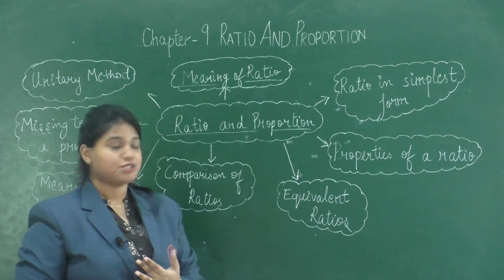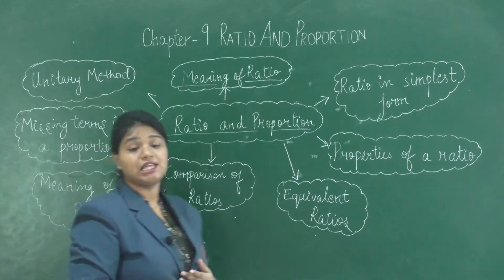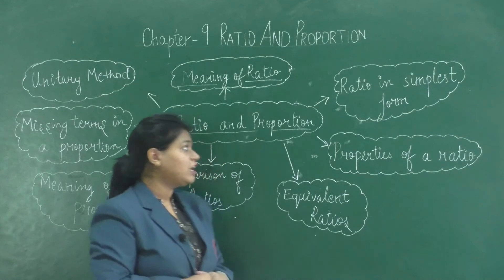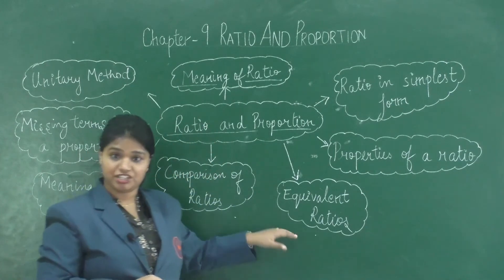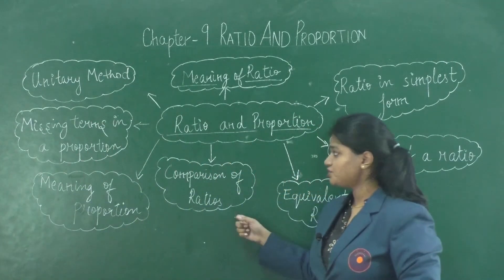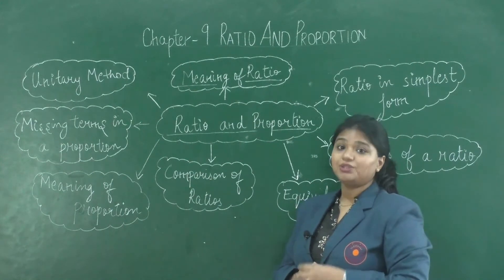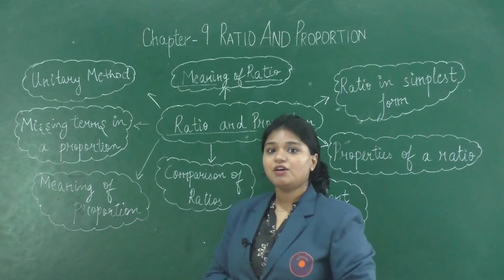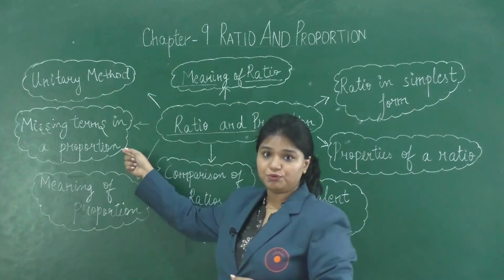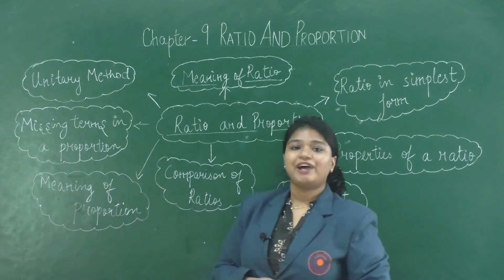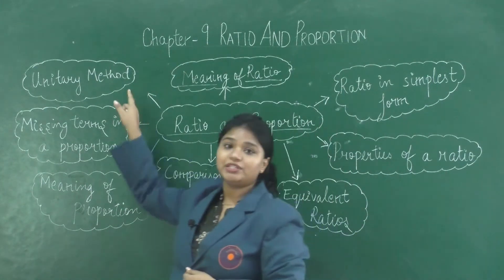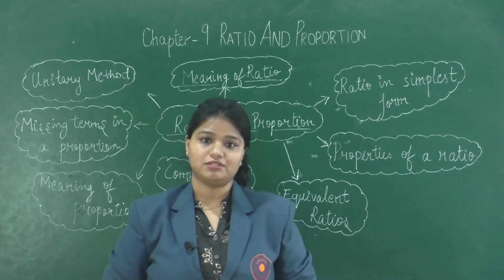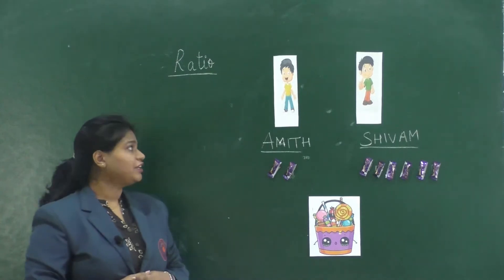We will start by learning about the meaning of the term ratio and its properties, then we will learn how to reduce a ratio in its simplest form. We will learn about equivalent ratios and how to compare ratios, then the meaning of proportion, how to find missing terms in a proportion, and finally the unitary method.